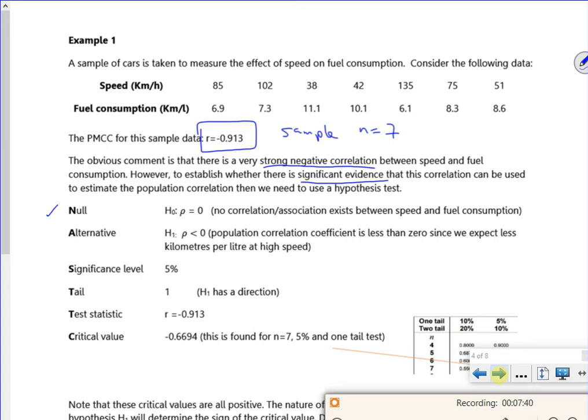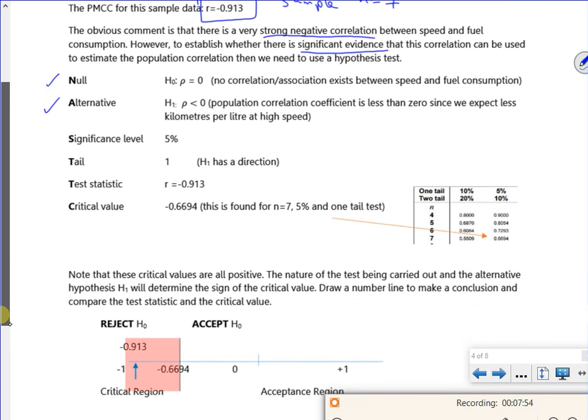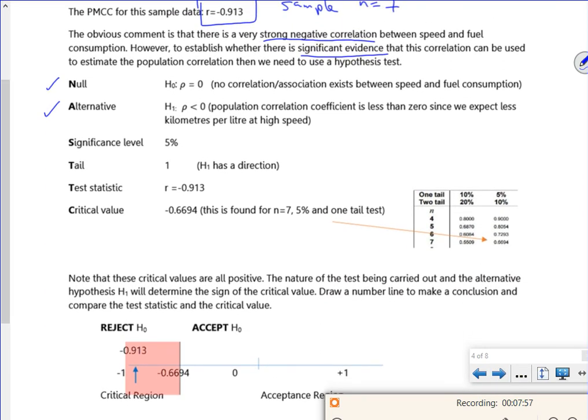Now, it's not clear in this question, but this has done it as a one-tailed test to say that there's definitely negative correlation. So we're seeing if it's a negative correlation. So we set it up as null and alternative. The significance level is 5%, so that's 0.05. And the tail is a one-tailed, because it's just a less than. So what I'm doing is I'm looking at the bottom 5% of my population.